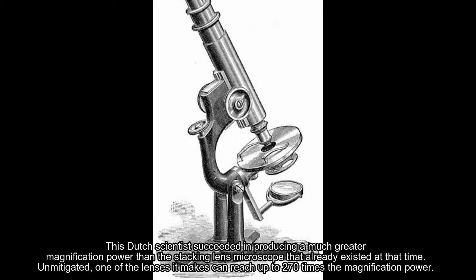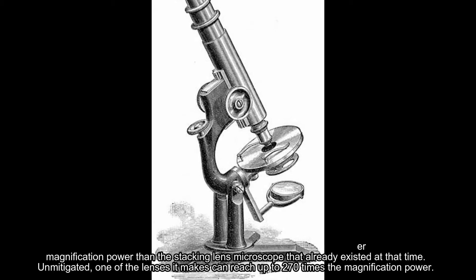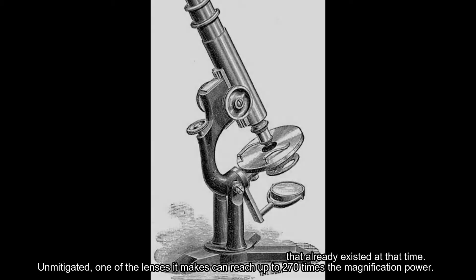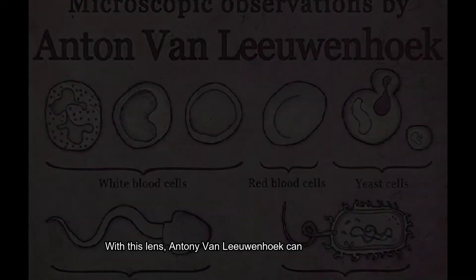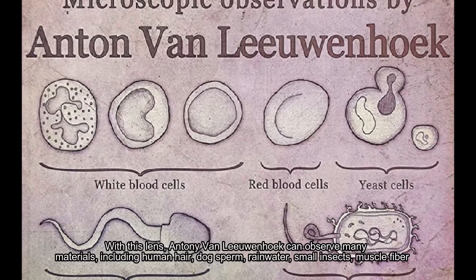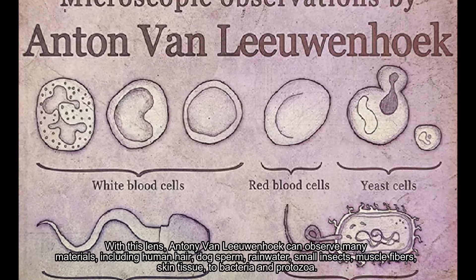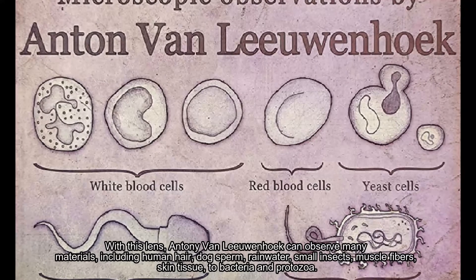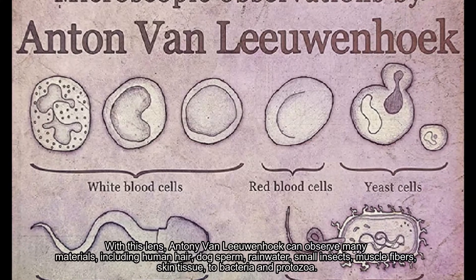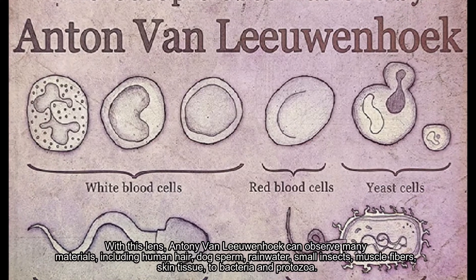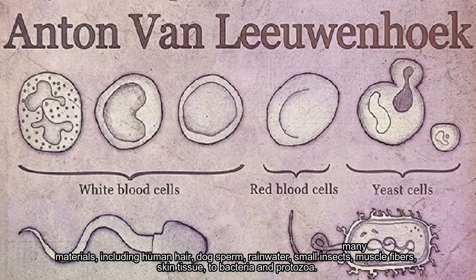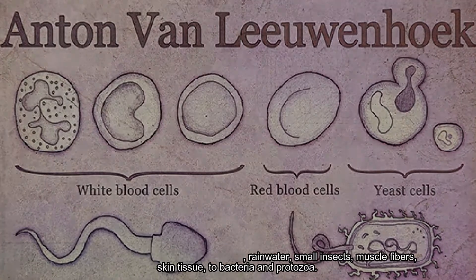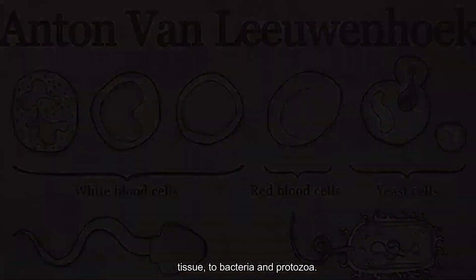Remarkably, one of the lenses he made could reach up to 270 times magnification power. With this lens, Antony Van Leeuwenhoek was able to observe many materials, including human hair, dog sperm, rainwater, small insects, muscle fibers, skin tissue, and bacteria and protozoa.